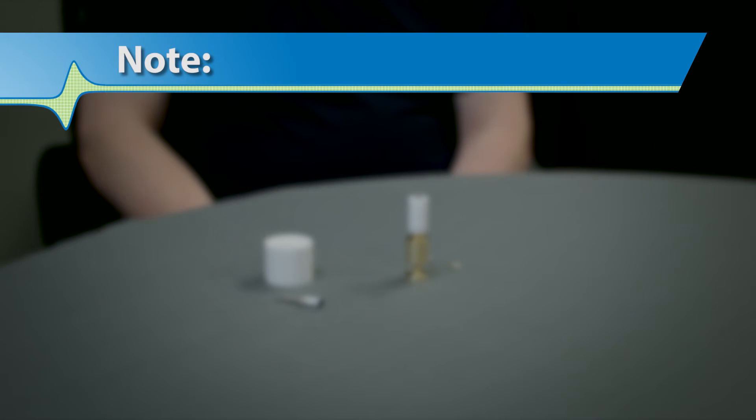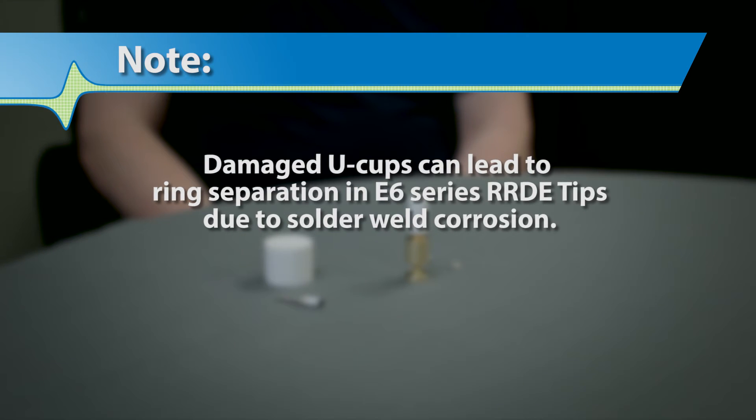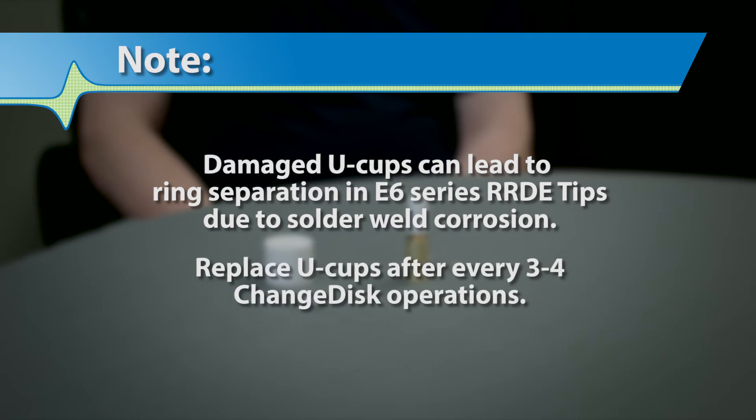A warning for you to consider. Damaged U-cups can lead to ring separation in E6 Series RRDE change disc tips due to solder weld corrosion. Replace U-cups after every 3-4 change disc operations.